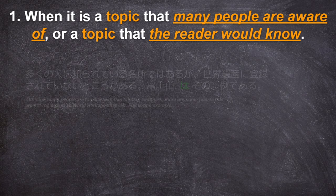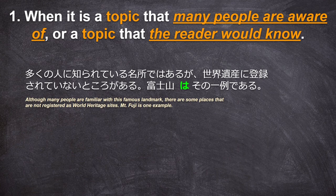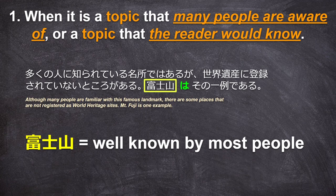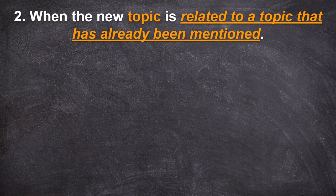For example, in the sentence: 多くの人に知られている名称ではあるが、世界遺産に登録されていないところがある。富士山はその一例である — Although many people are familiar with this famous landmark, there are some places not registered as World Heritage Sites. Mount Fuji is one example. Maybe the reader didn't know it's not registered as a World Heritage Site, but Mount Fuji is well known by almost everyone. So even though the fact that it hasn't been registered yet is a new topic, 富士山 is known by many people and therefore needs a wa after it instead of ga.